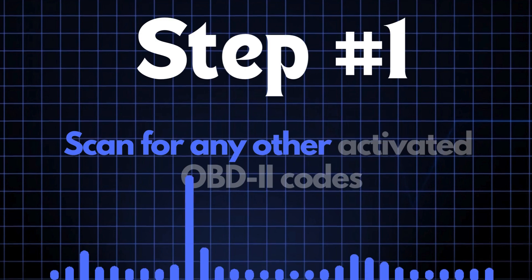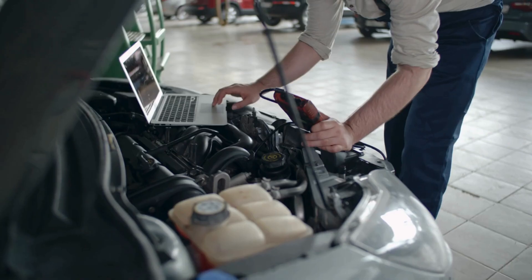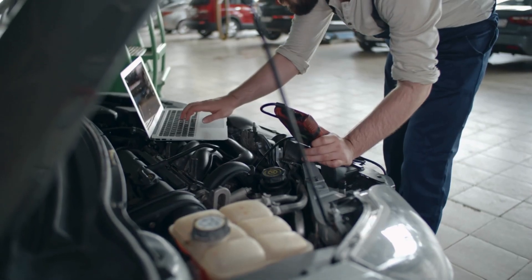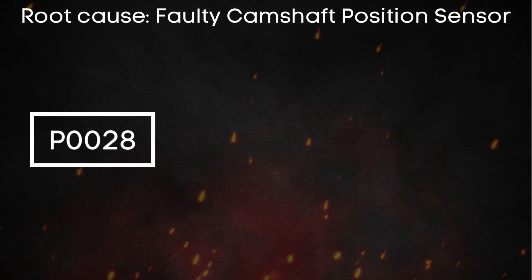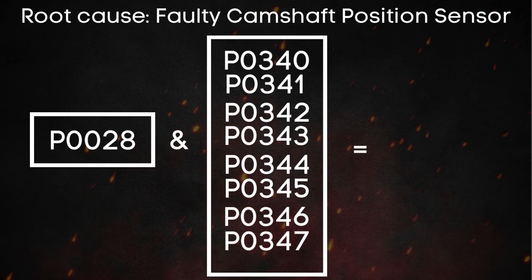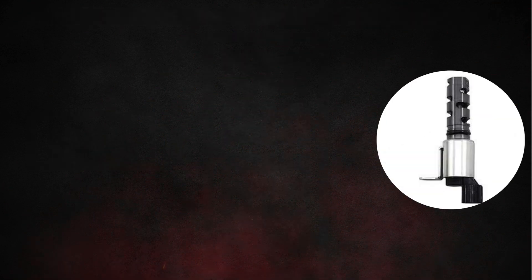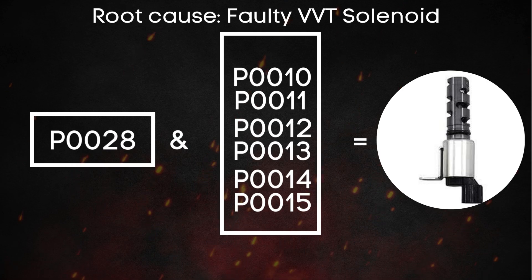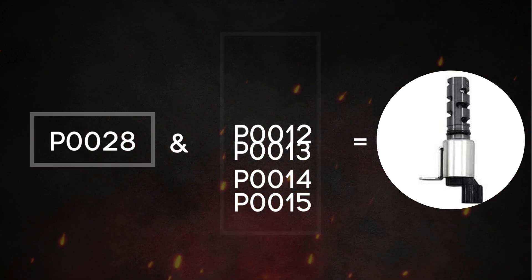The first step is to scan for any other activated OBD2 codes. This helps us pinpoint where we need to focus. If there are other codes related to a faulty camshaft sensor, we should focus on the camshaft sensor. Similarly, if there are codes related to the VVT solenoid, that's where our attention should go.